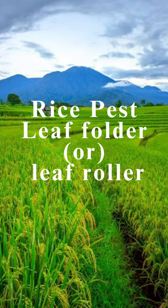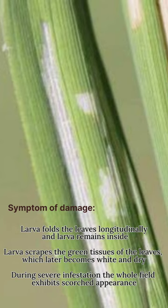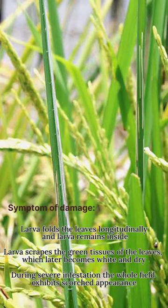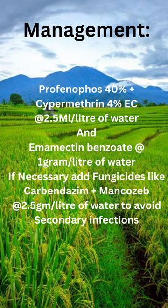Pest of paddy: leaf folder or leaf roller. Symptom of damage — the larva folds the leaves longitudinally and remains inside, scraping the green tissues of the leaves, which later become white and dry. Management: profanifers 40 plus cypermethrin 4% DC at 2.5 milliliters per liter of water.